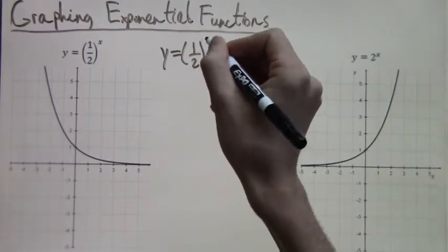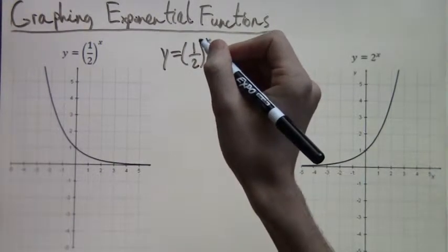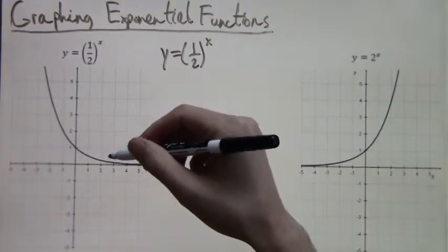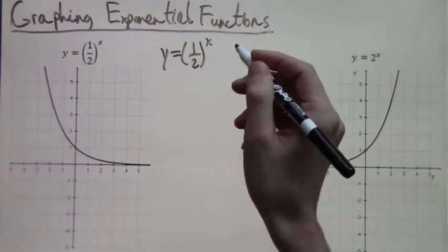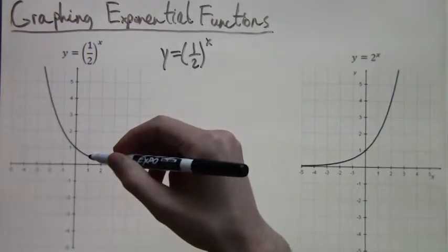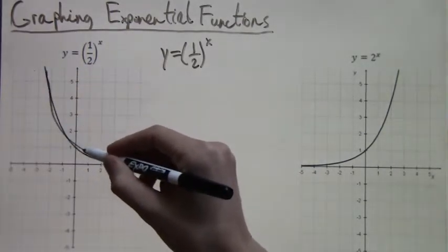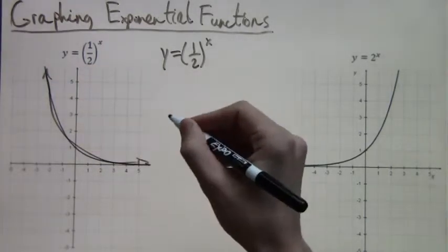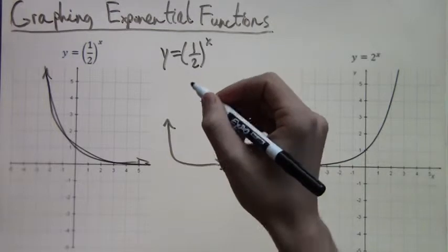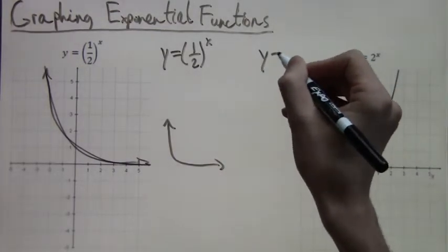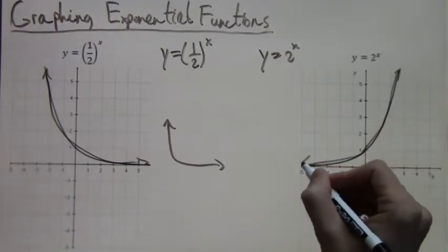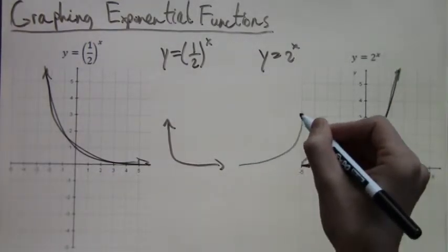So first let's look at one half to the x. The main difference between this example and the example to the right is that we have a curve going down. It starts really high and then it curves down and gets really close to zero but never actually reaches it. In the other example we have the opposite shape. It starts really low, really close to zero but not quite, never actually touches zero, and then it goes up really high.